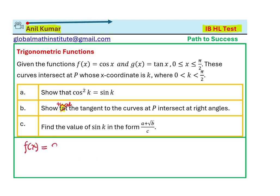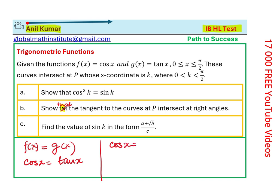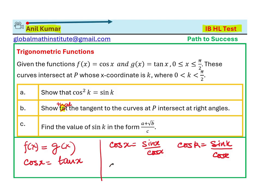This means f(x) equals g(x). f(x) is cos x, g(x) is tan x. So if you solve it, you can write cos x equals sin x over cos x. At P where they intersect, x value is k, so we can say cos k equals sin k over cos k. When you cross multiply, you get your result: cos²k equals sin k.